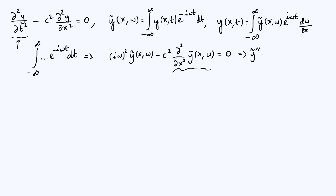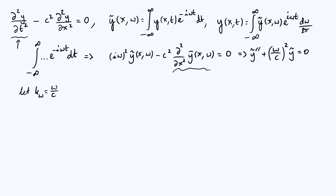So our equation becomes y-tilde double-prime plus omega over c, all squared, times y-tilde equals zero. Now it's useful to define another parameter. I'm going to let k be defined as omega over c, and I'm going to give k a subscript omega just to emphasize that k is really a function of omega — it depends on the value of omega rather than just being a constant.